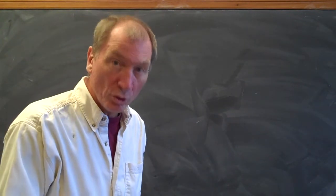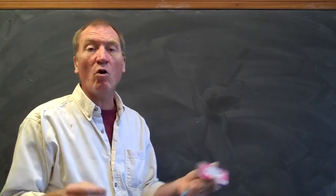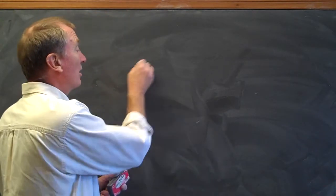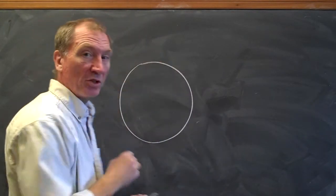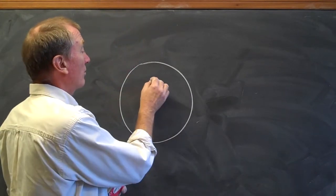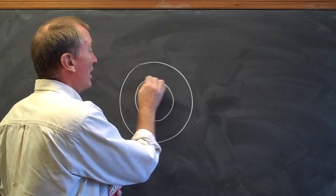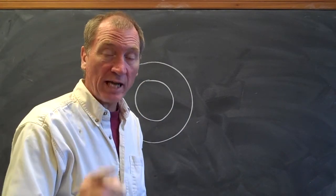Now, a monocot root has the same sort of overall structure in that it has epidermal cells around the outside. It has an endodermis with a Casparian strip.